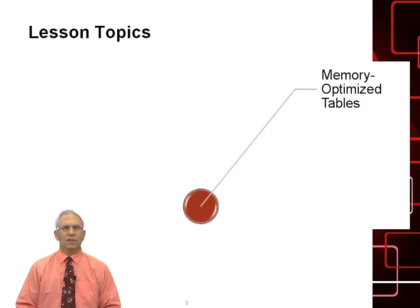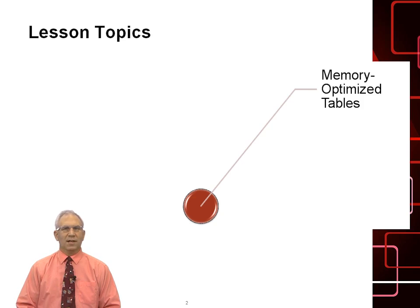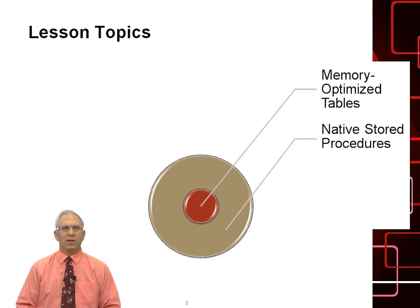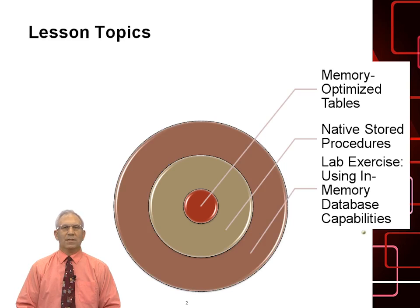In this lesson we will look at the new feature of memory optimized tables. There are certain advisors that we can issue within SQL Server to determine if a table is a good candidate to become a memory optimized table. We can also create a memory optimized file group and then place that table in that file group. We will also look at native stored procedures, and at the end there will be labs on using in-memory database capabilities.